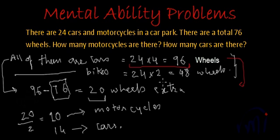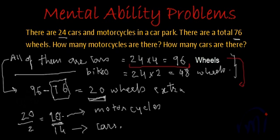To summarize: we first assumed all of them are cars, giving 96 wheels — that is 20 more than the 76 given. So we remove 2 wheels from each car to convert them into motorcycles. Every time we remove 2 wheels from a 4-wheeler, we move it from the car pool into the motorcycle pool. Since there were 20 extra wheels, we get 10 motorcycles, and 24 minus 10 gives us 14 cars.